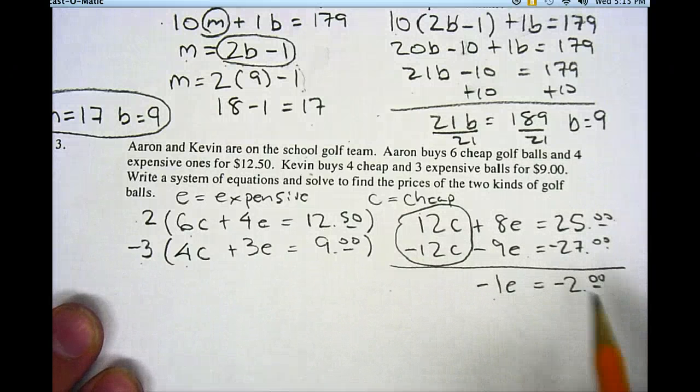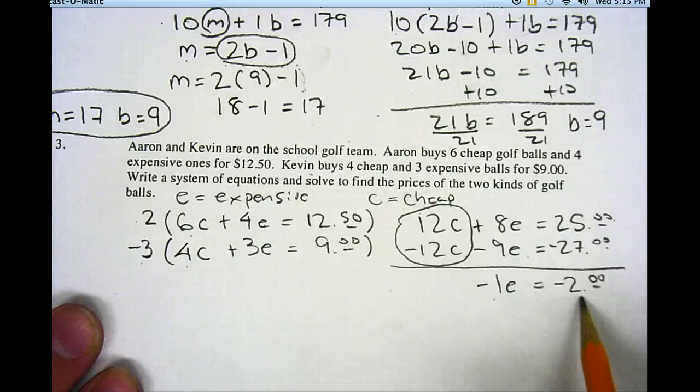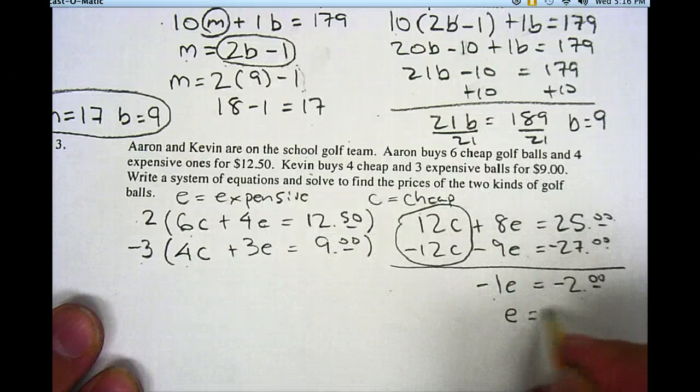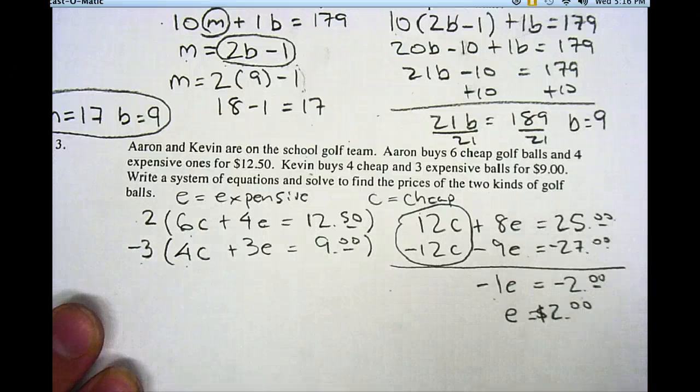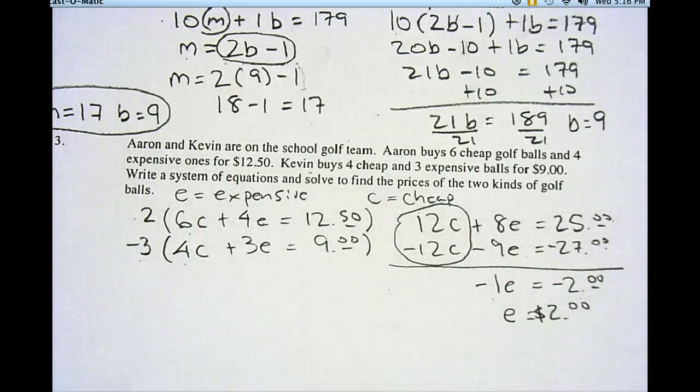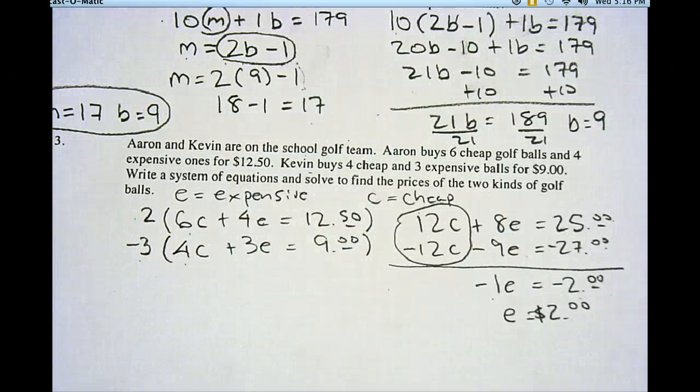Well, if negative 1E is equal to negative $2, that means E has got to be $2. So my expensive golf balls have to be $2. Now I've got to plug that $2 back into either equation and find out how much my cheap golf balls are.